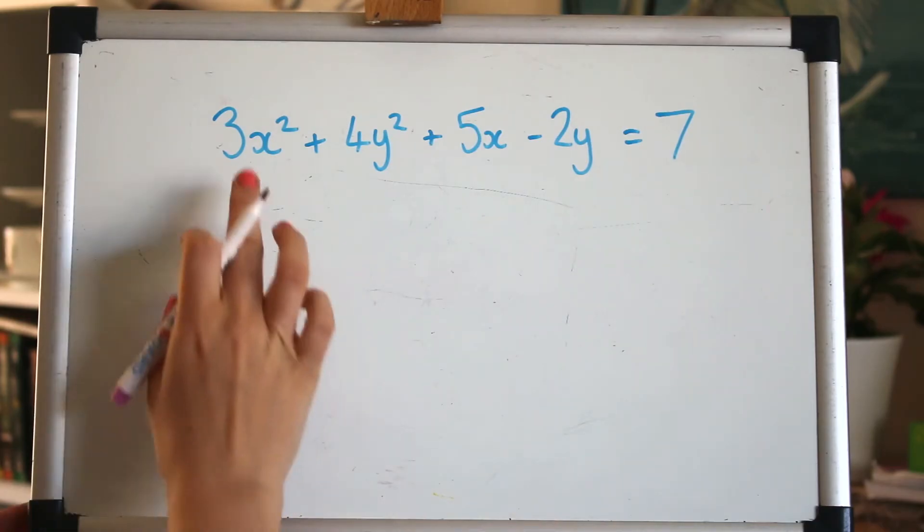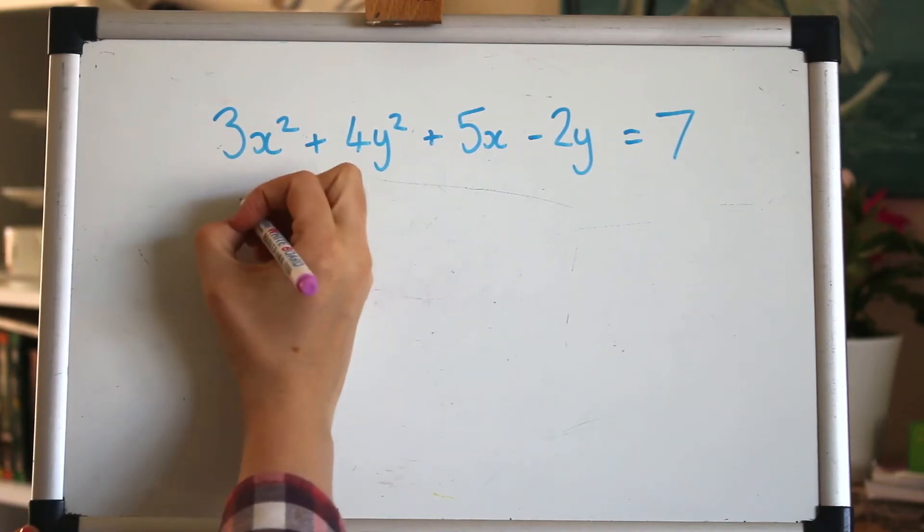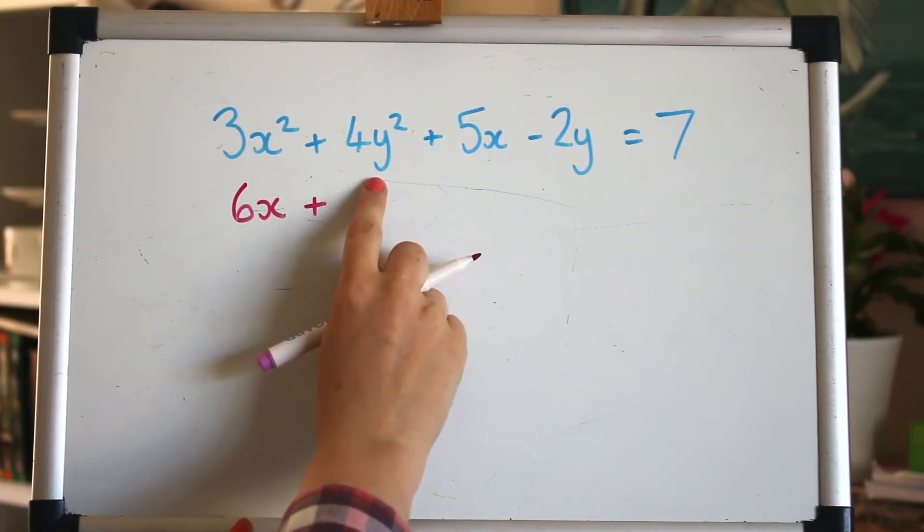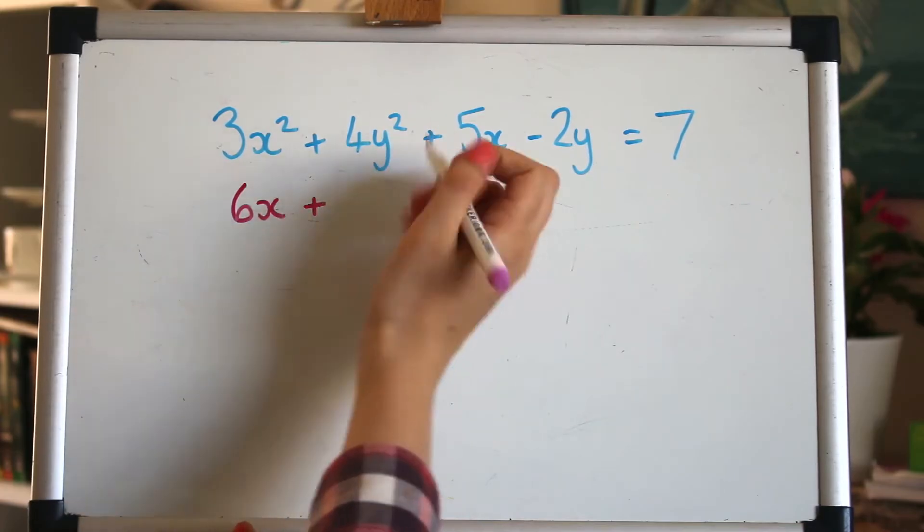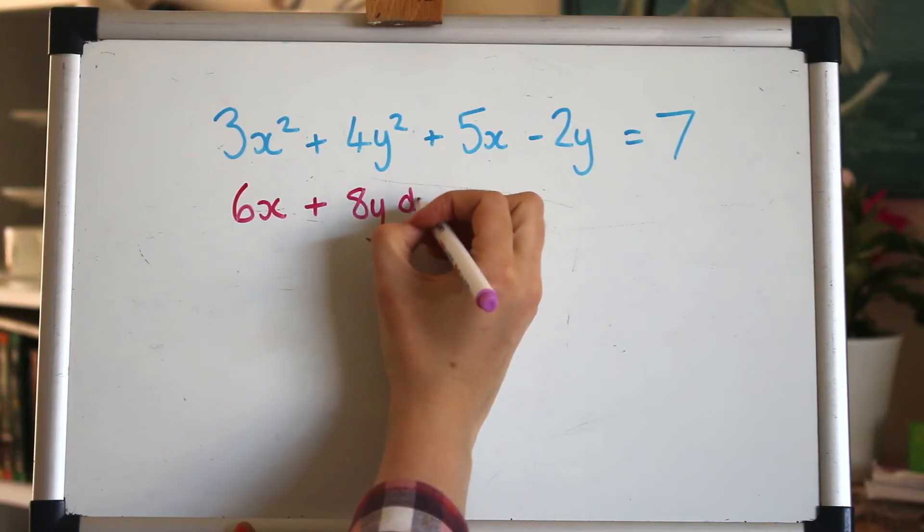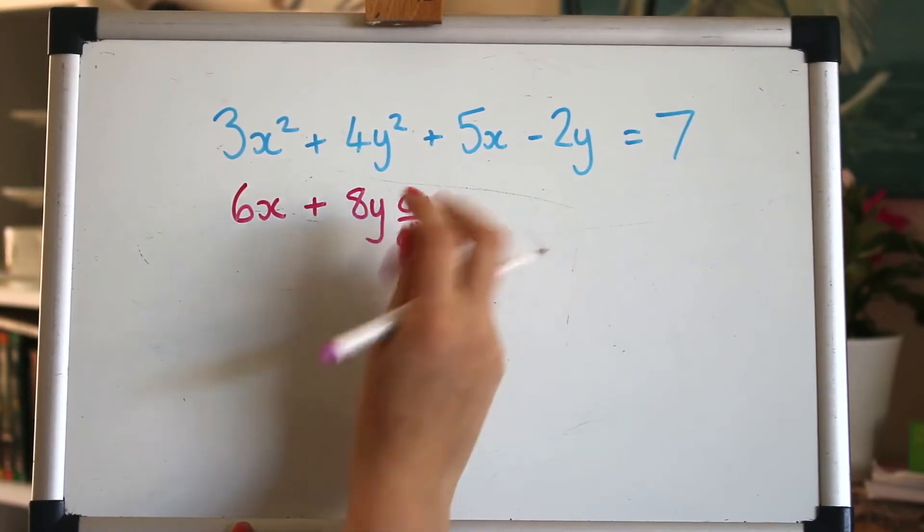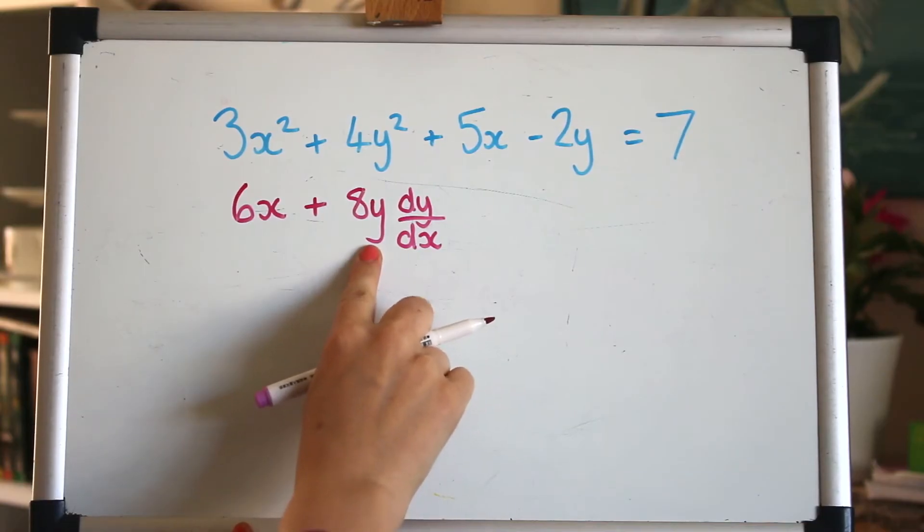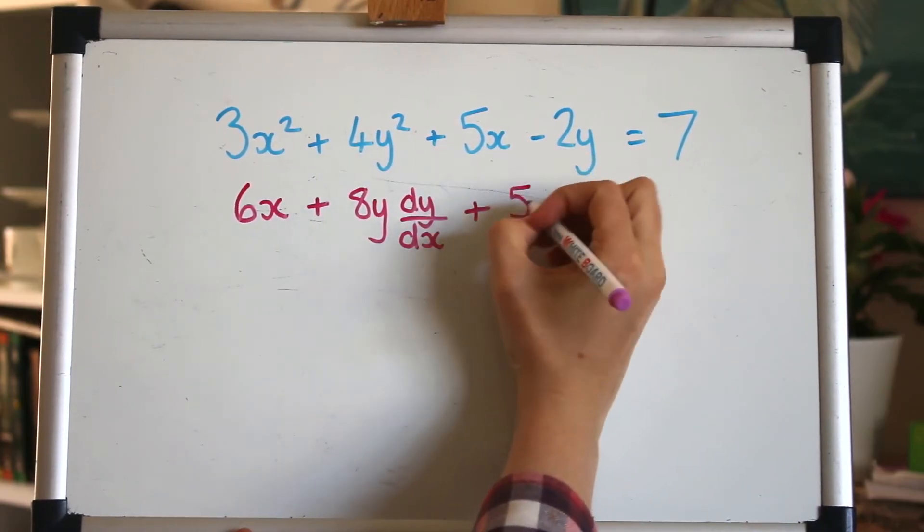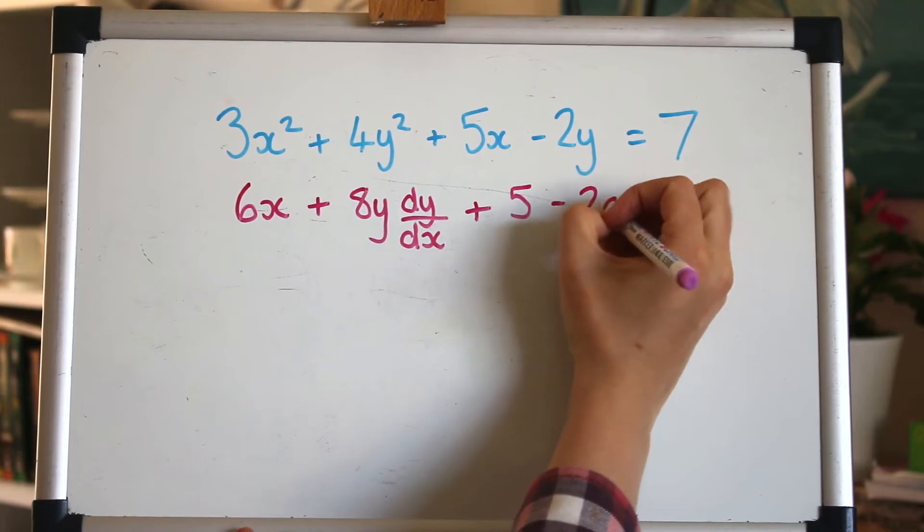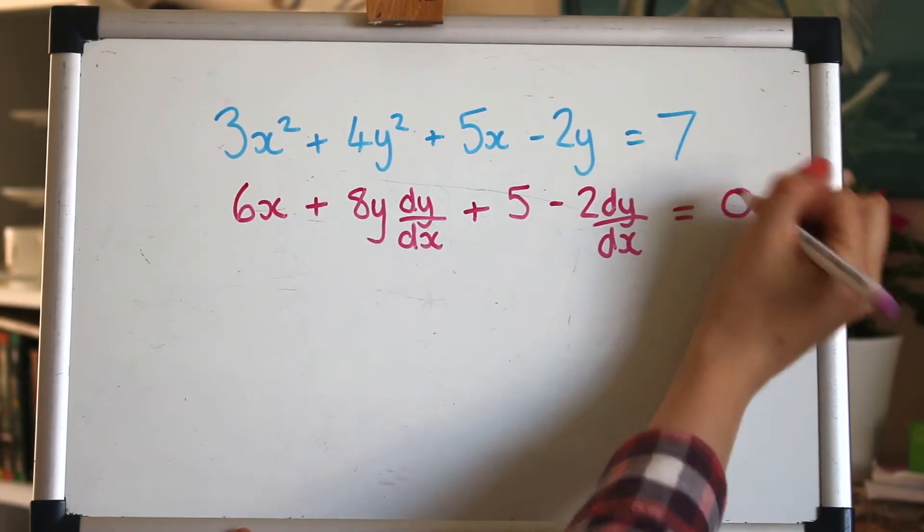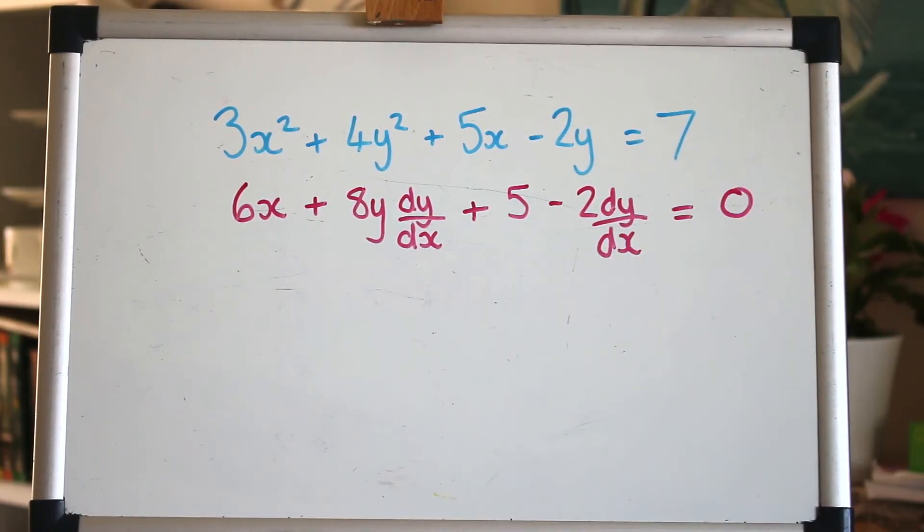So let's differentiate this. The first term is to do with x so that can happily differentiate as usual and then the next term is a y term. So I'm going to differentiate that with respect to y first so that will be 8y and then because it's a y term we need to times by dy by dx. So do you see you're just differentiating that how you normally would and write dy by dx after it. Okay next term is just x so that's fine and then the y term you just need to remember your dy by dx. 7 would differentiate to nothing because it's a constant and that is it differentiated.